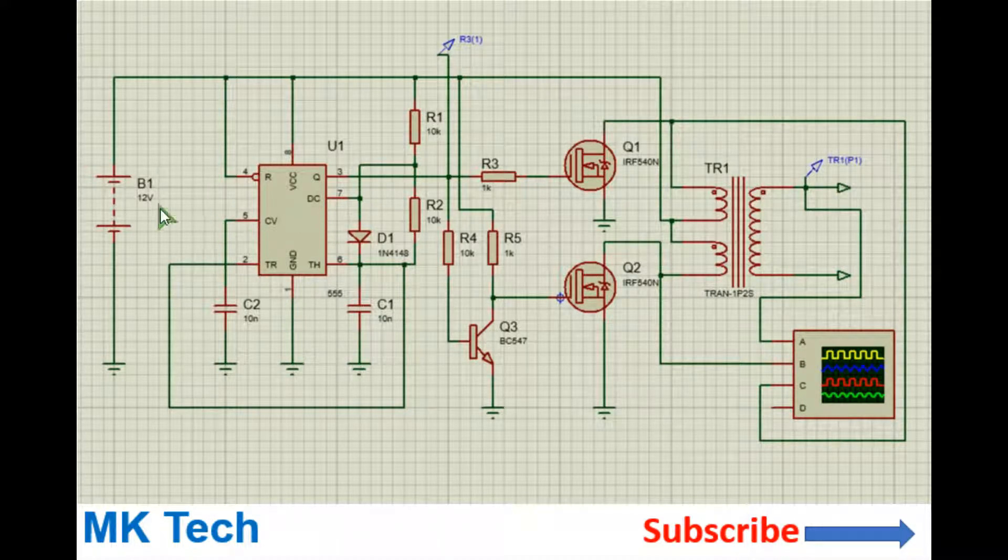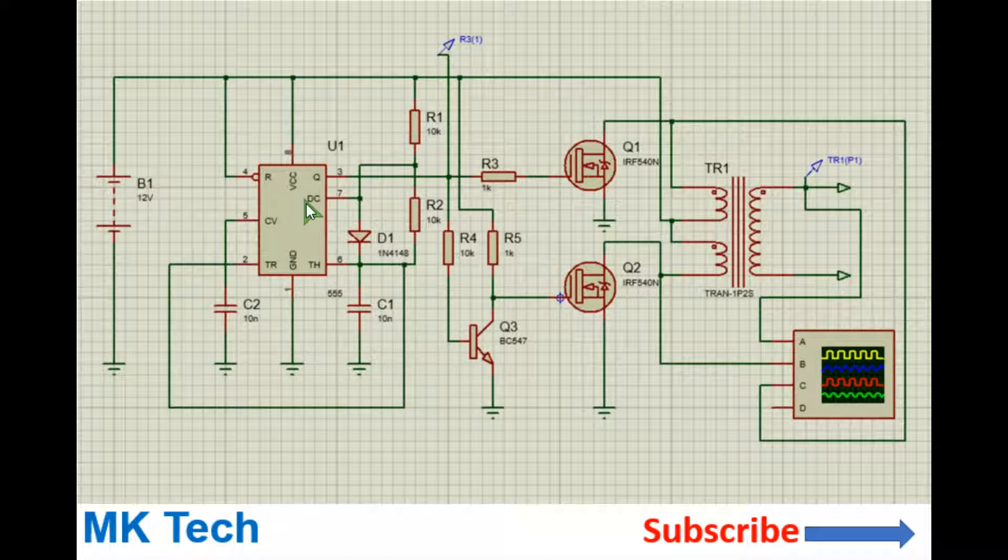So for the components you need a 12 volt battery. You also need a 555 timer IC. This will generate the desired square wave output pulses. You also need some power MOSFETs. You can easily find the IRF 540 MOSFETs and they can handle 2 amperes.